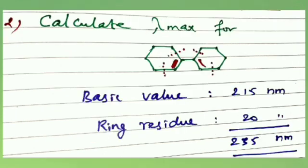Second example: calculate lambda max for the ring system. The basic value is 215 nm.